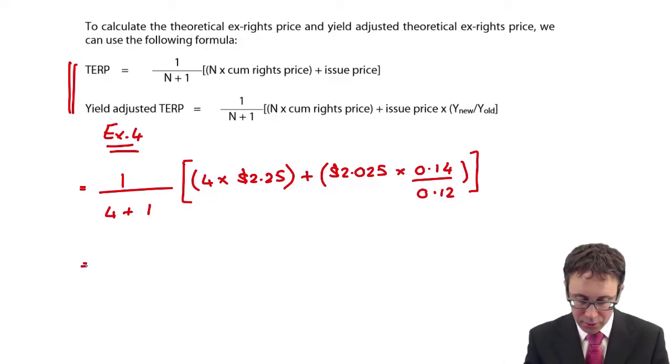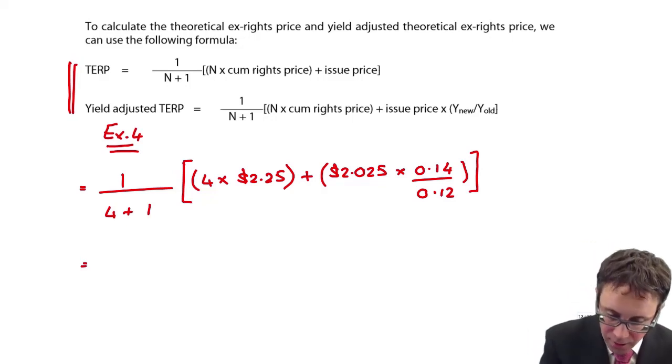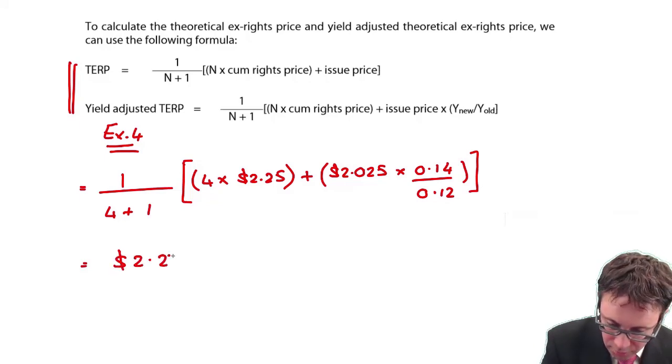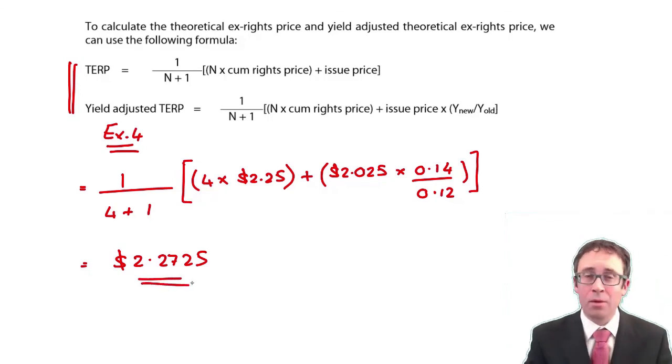Let's just check: 0.14 divided by 0.12 times 2.025. Excellent. Plus open brackets, four times 2.25, divided by five. There we go. Magic: 2.2725. Same number as before.